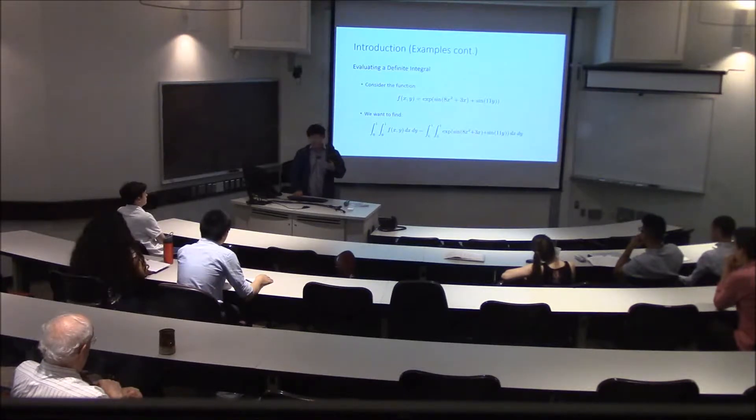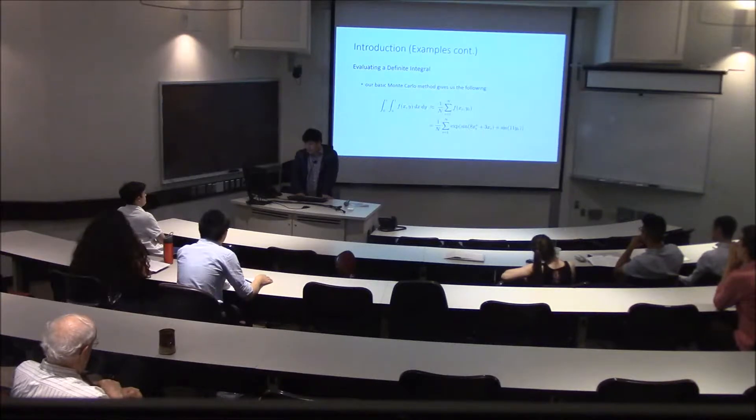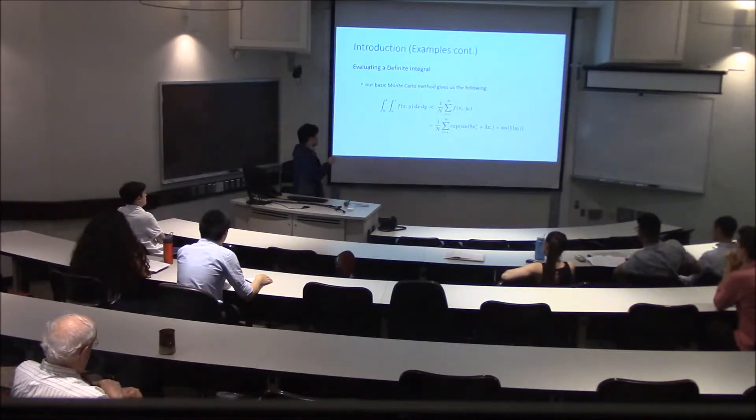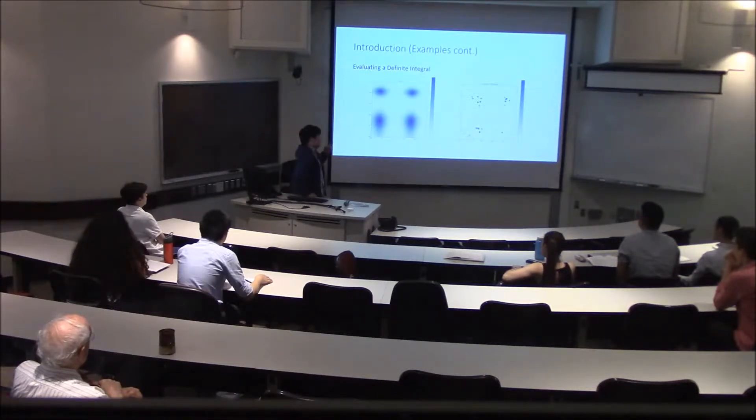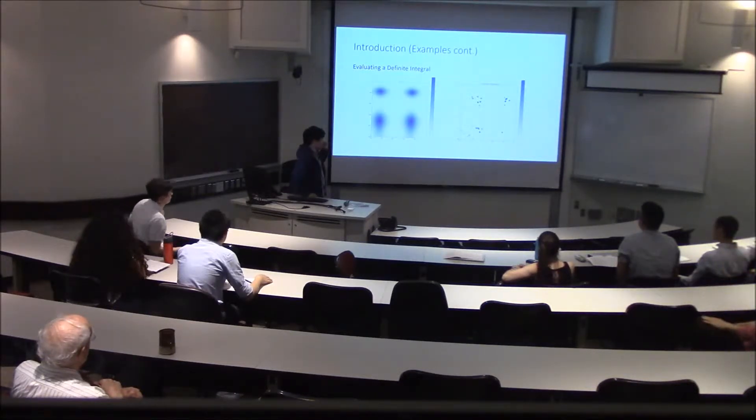Next is simply evaluating a definite integral. We could analytically do this pretty easily, but for the sake of example, if we define f to be this function and we want to find the integral from 0 to 1 in respect to dx and dy, essentially what we'll do is sample random points of f a number of times and then just take the mean of those.